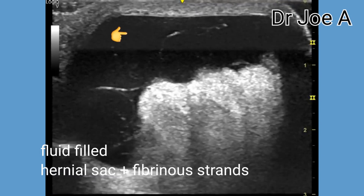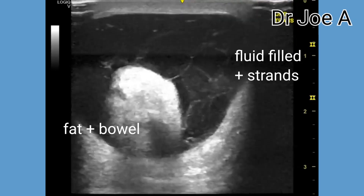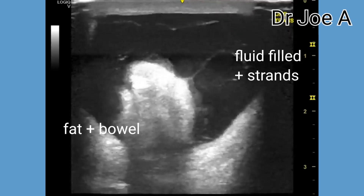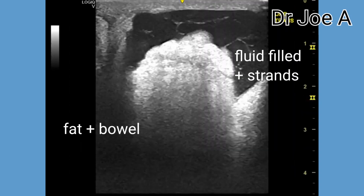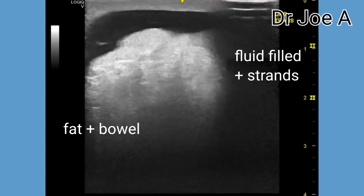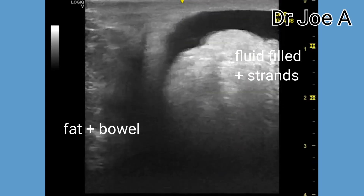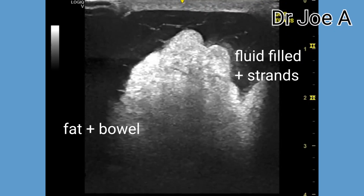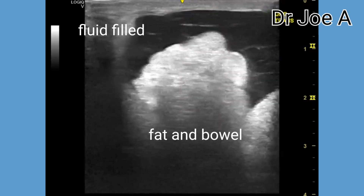Adults with umbilical hernias may experience pain, discomfort, or a visible bulge in the area around the umbilicus. In this patient, the umbilical hernia contains fluid with fibrinous strands and mesenteric fat as well as small bowel loops. The mesenteric fat and fibrinous strands are seen within the hernial sac.